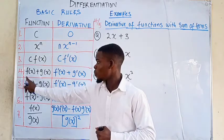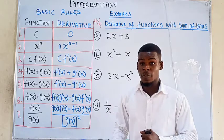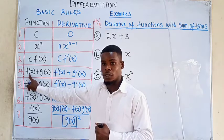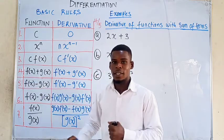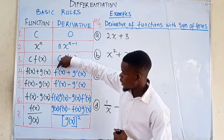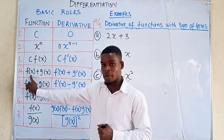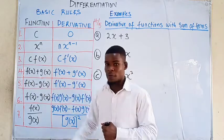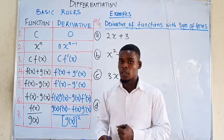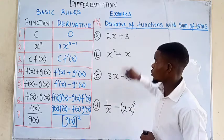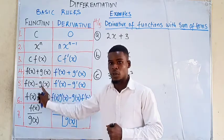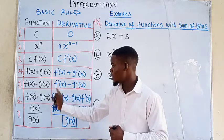Now in this video we'll be looking at the fourth and fifth rules. The fourth rule covers a function that is the sum of two functions: the derivative of that sum is the derivative of the first function plus the derivative of the second function — f'(x) from f(x), and g'(x) from g(x). The fifth rule tells us that the derivative of the difference of two functions is the difference of their derivatives.